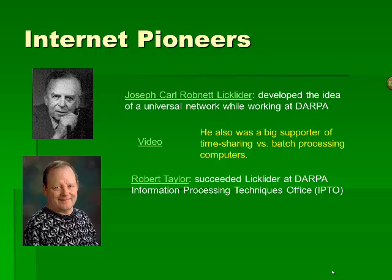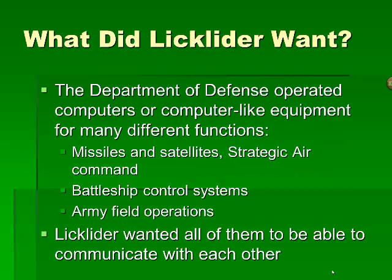One of the successors of JCR Licklider was Robert Taylor, who became head of the Information Processing Techniques Office, the IPTO, and was responsible for contracting various people to do work on the early technologies behind the Internet. Licklider wanted a system that would allow the different kinds of computers purchased and used by the Department of Defense to communicate with each other and function as an integrated system. There were different computers for the missiles and satellites of the Strategic Air Command, the Navy's battleship control systems, and the Army's own computing facilities. Licklider wanted all of them to be able to communicate with each other.